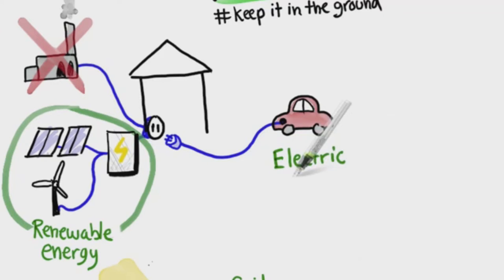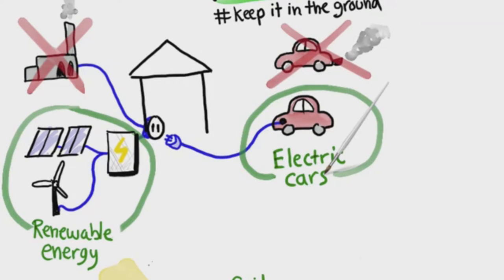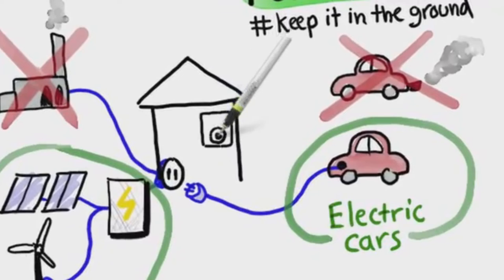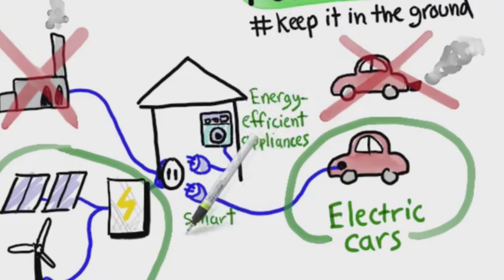They're still pretty expensive, but prices are coming down fast. Of course an electric car is only as clean as the electricity it uses, but the difference is that a fuel car will stay dirty forever, while an electric car gets cleaner automatically as the power grid gets cleaner.